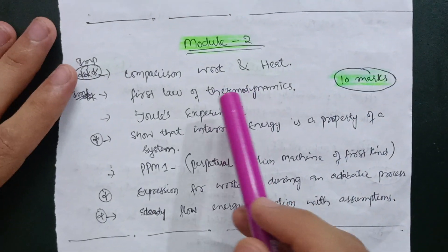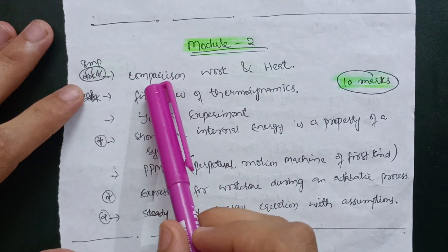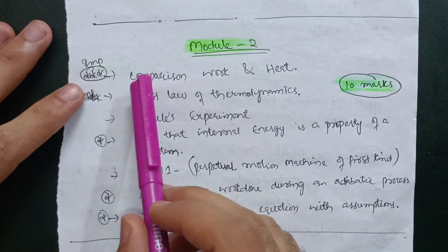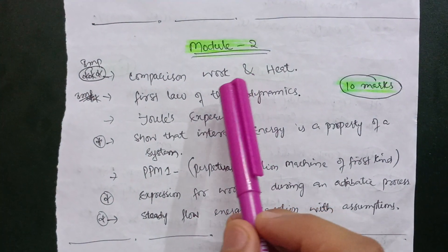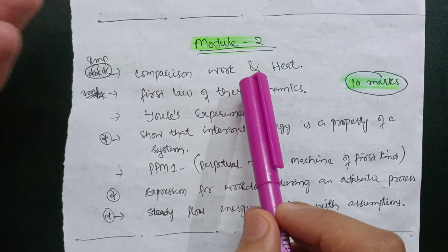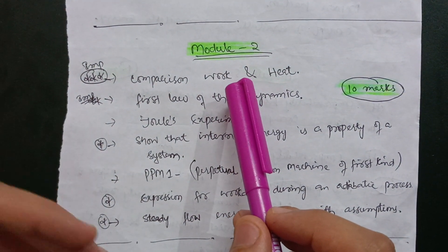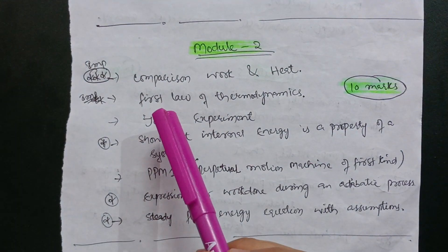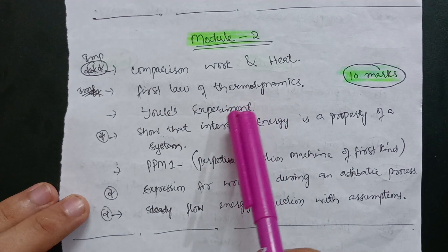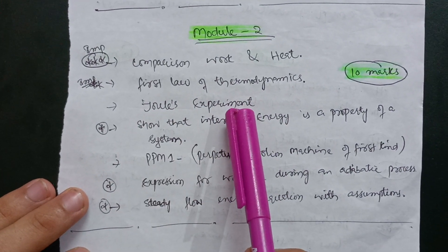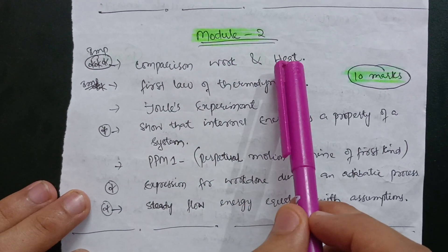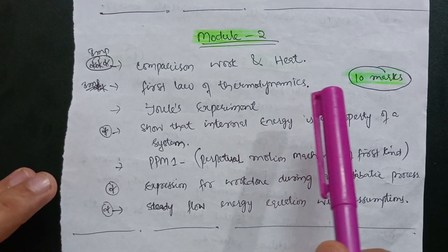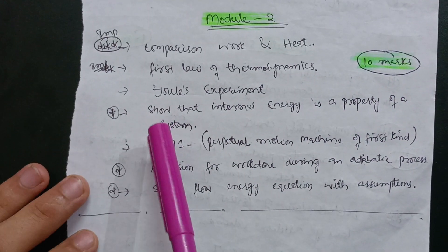In the second module, the most important question is the comparison of work and heat. Go through this comparison carefully — if they ask only for definitions of work and heat, by studying this comparison you can easily derive those definitions. The next important topics are the first law of thermodynamics and Joule's experiment. Focus on first law of thermodynamics and work and heat if you want to pass BTD.